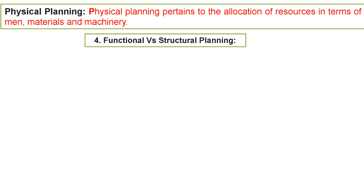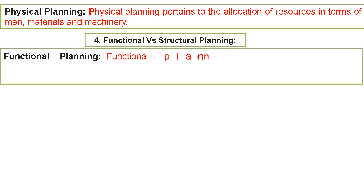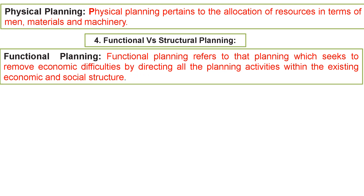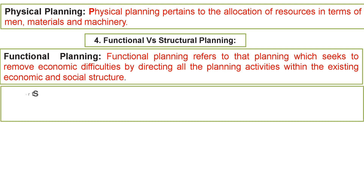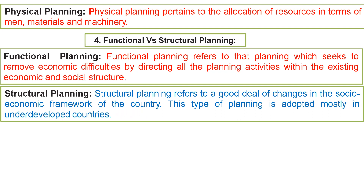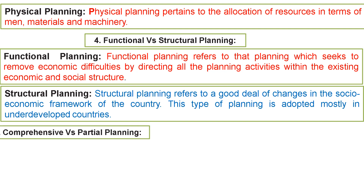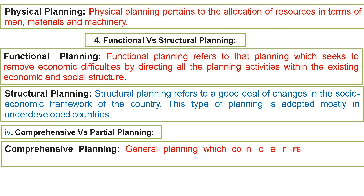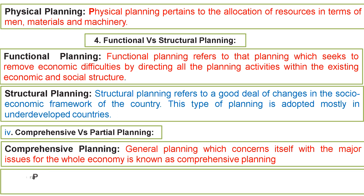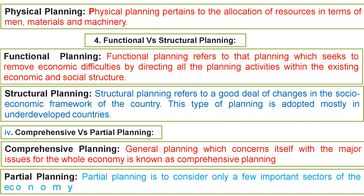Functional planning refers to planning which seeks to remove economic difficulties by directing all planning activities within the existing economic and social structure. Structural planning refers to a fundamental change in the society and economy framework of the country, mostly adapted in underdeveloped countries. Comprehensive planning concerns itself with major issues for the whole economy. Partial planning considers only a few important sectors of the economy.